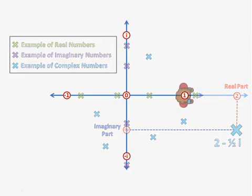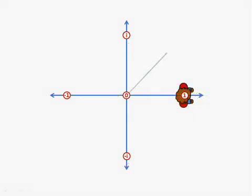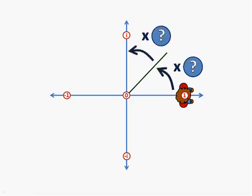So now comes an interesting question. What number do we need to multiply by to turn through 45 degrees? Well just like before, two turns of 45 degrees equal a turn of 90 degrees. So the number we need to multiply by is actually the square root of i.